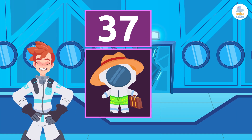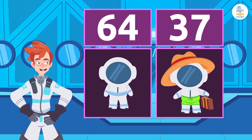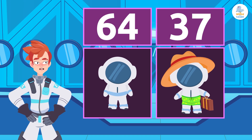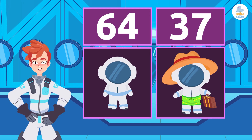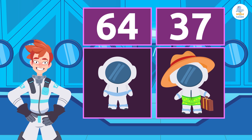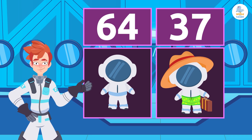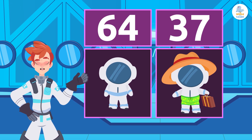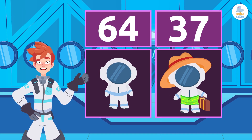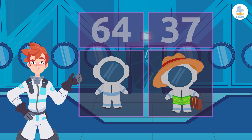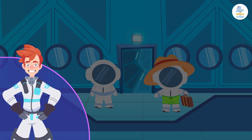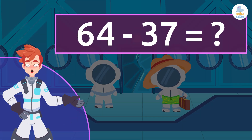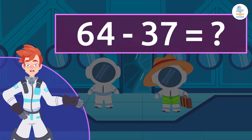37 of the 64 astronauts living on the space station went on vacation to Earth. How many astronauts are left on the space station? To find out, we have to subtract 64 minus 37.